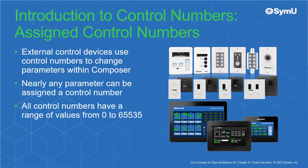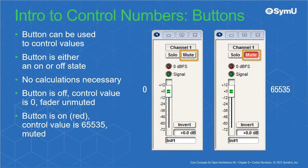External control devices use assigned control numbers to change parameters within Composer. Nearly any parameter can be assigned a control number, and all control numbers have a range of values from 0 to 65535. Rather than a fader, a button can be used to control values. Since a button is either an on or off state, no calculations are necessary. When the button is off, the control value is 0 and the channel is unmuted. When the button is on and is red, the control value is 65535 and the channel is muted.